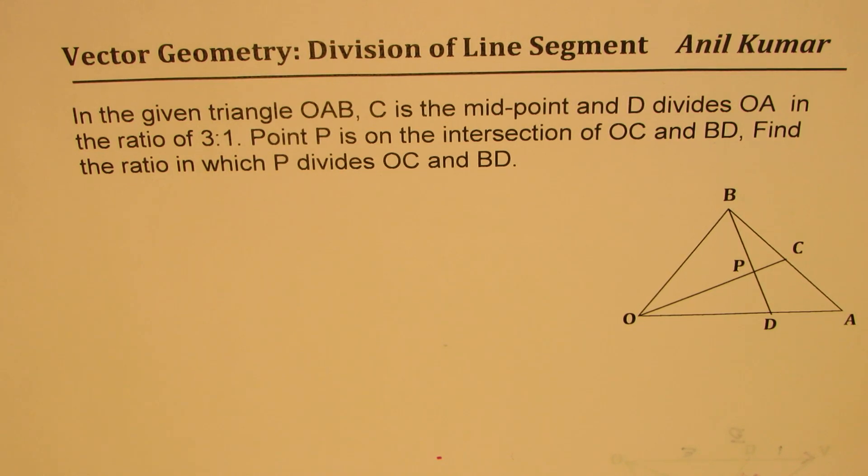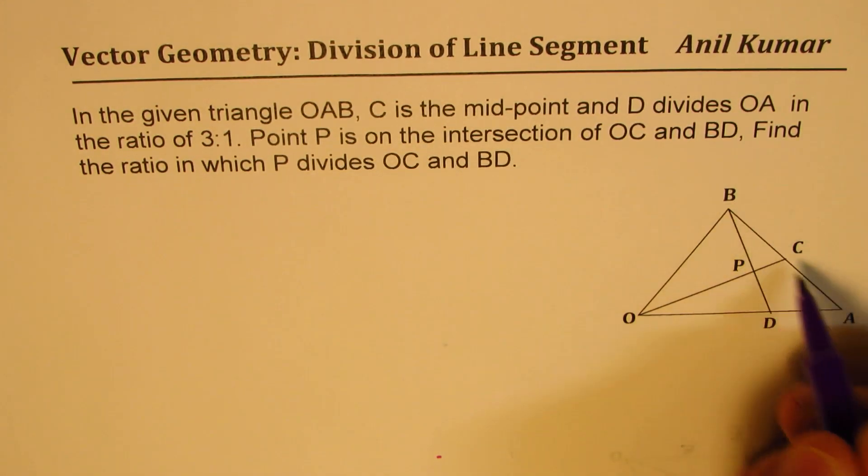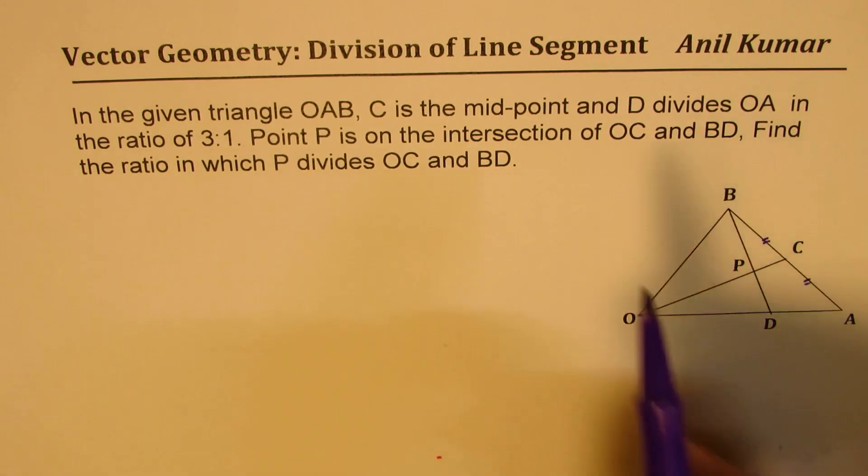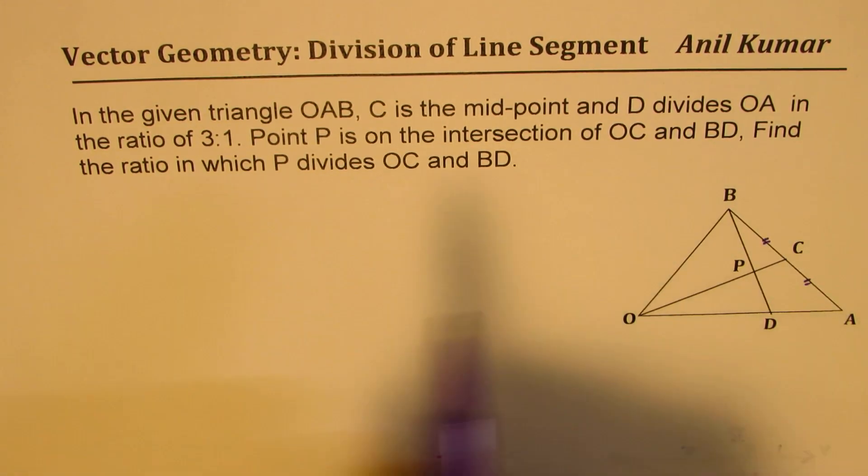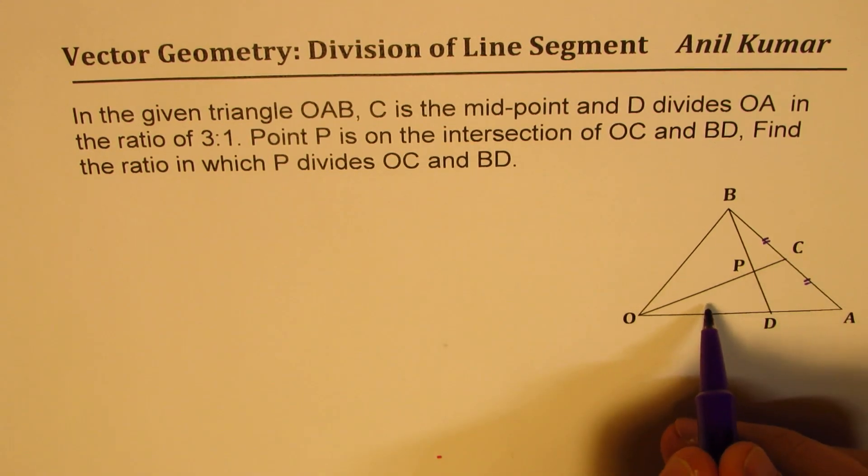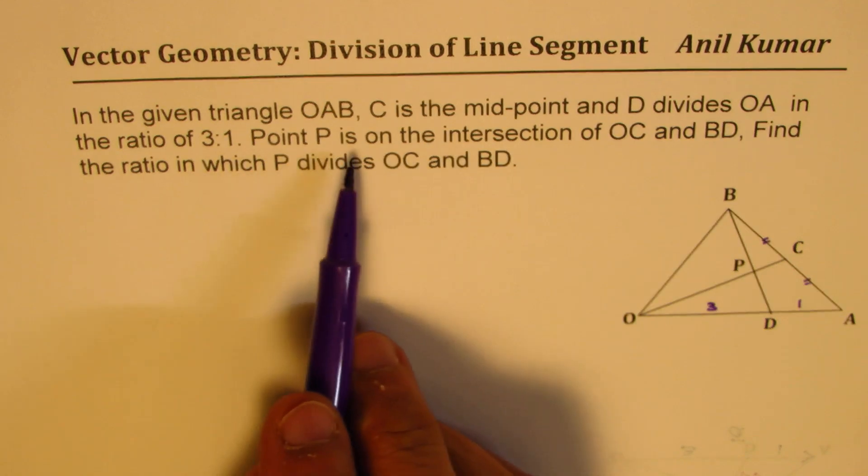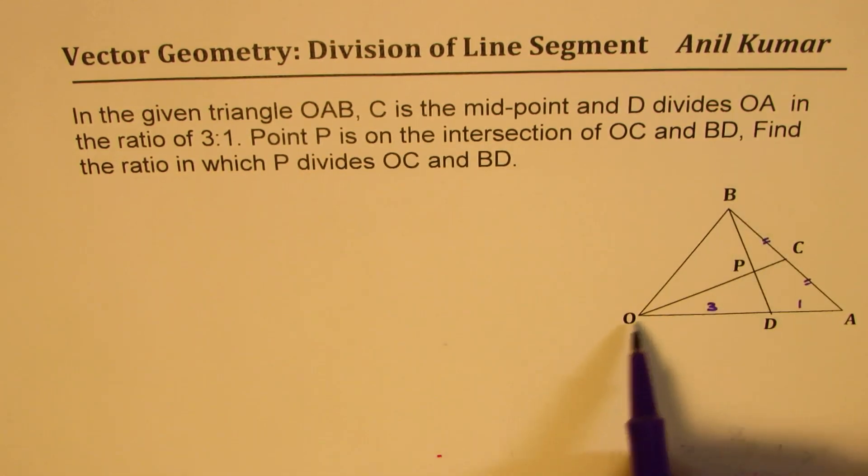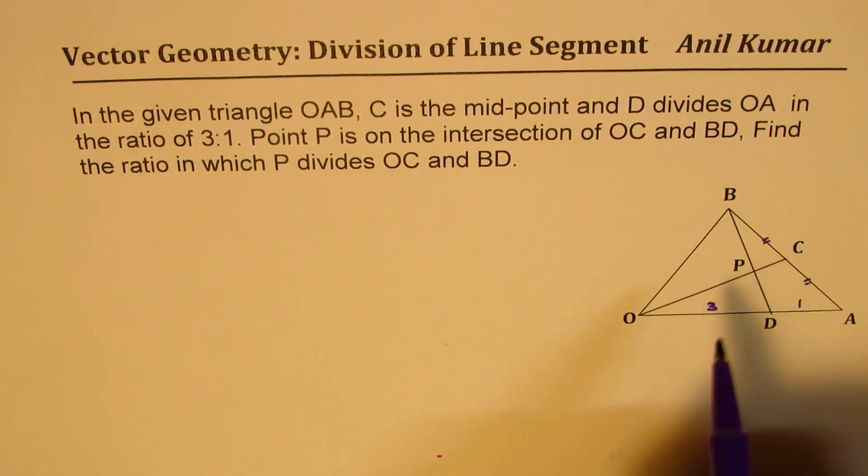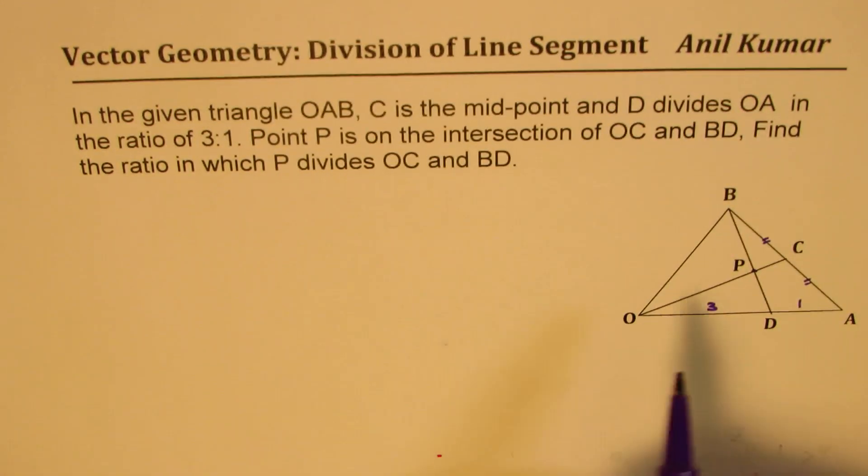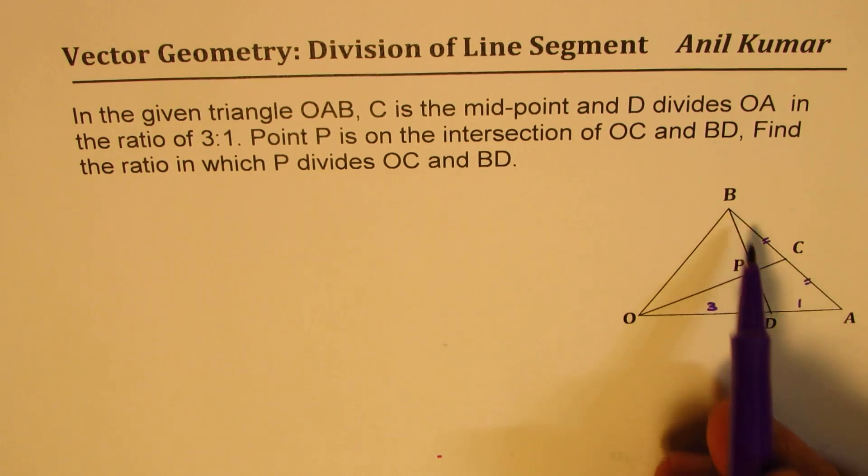The question here is, in the given triangle OAB, C is the midpoint so that means this divides them into equal ratios and D divides OA in the ratio of 3 to 1 so this is 3 and that is 1. Point P is on the intersection of OC and BD. So, this is point P for us.